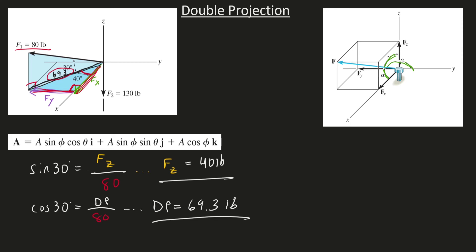So we can get the X and Y components by doing cosine and sine. So the cosine of that 40 degrees will equal the adjacent of that 40, which is the X component, over that double projection, the 69.3, that's that DP, and you get 53.1 pounds.